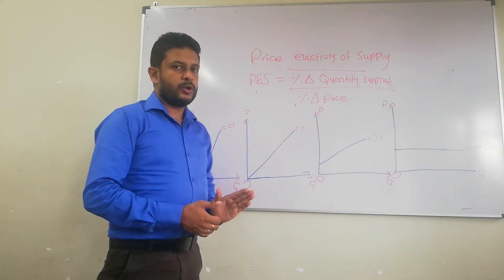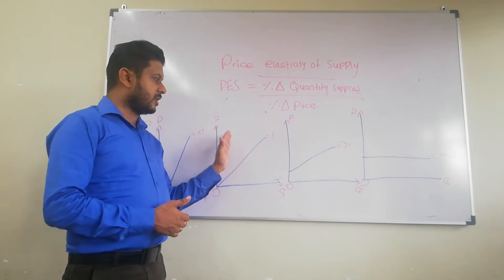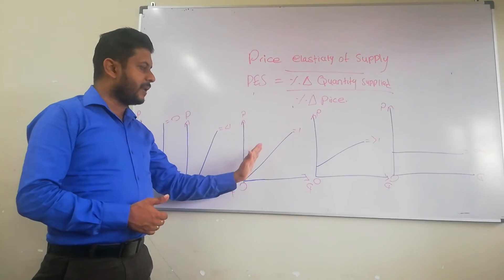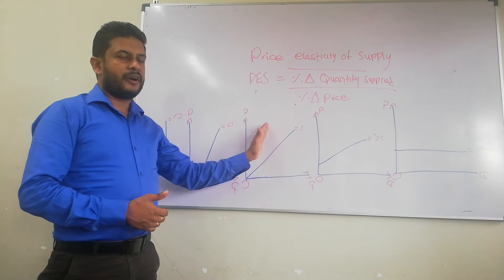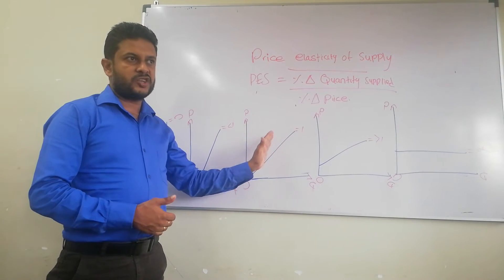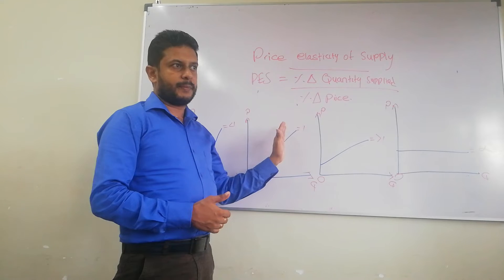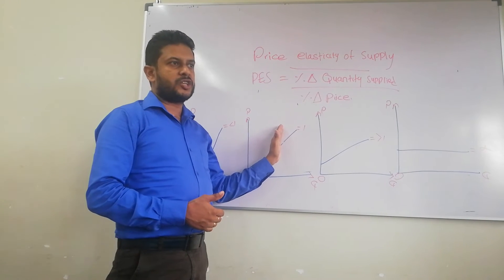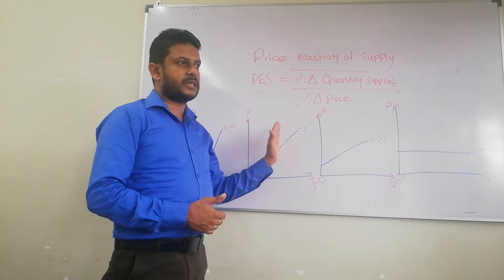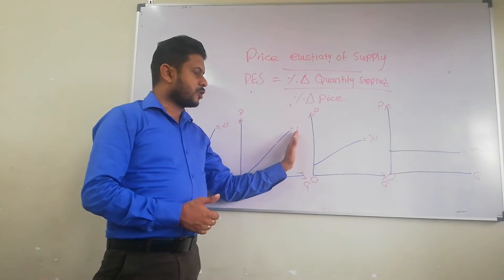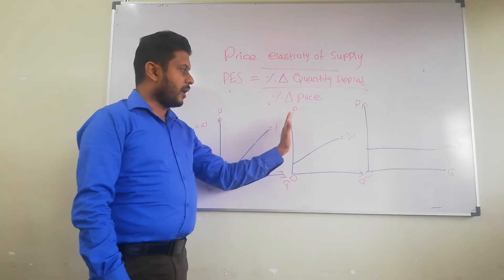Next, we are going to talk about unit elastic supply. Unit elastic supply means the responsiveness of quantity supplied to a change in price is equal to the price response — when there is a change in price, quantity supplied will respond equally. The elasticity value will be 1.